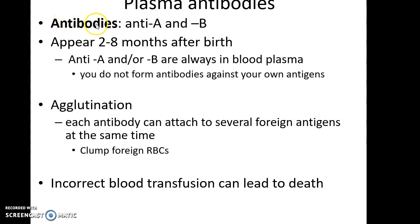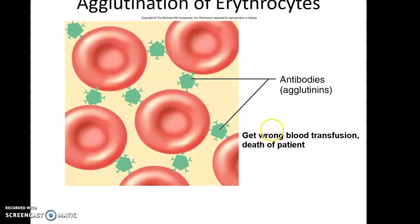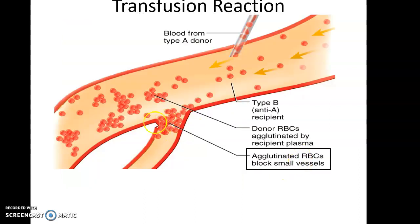Anti-A antibodies bind to the A antigen; anti-B antibodies bind to the B antigen. These antibodies show up when the child is around two to eight months old. They only form antibodies against the thing they do not have. Antibodies cause agglutination when you get the wrong blood cells, and an incorrect blood transfusion can lead to death of the patient. The antibodies bind multiple red blood cells, creating clumps that can block blood vessels, potentially leading to strokes and heart attacks.